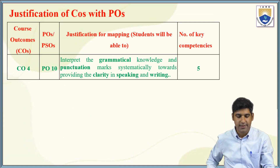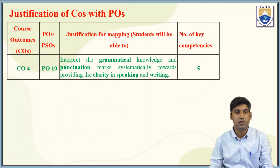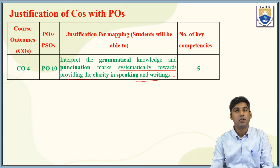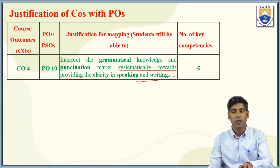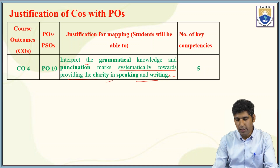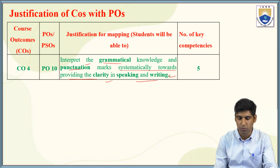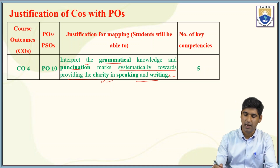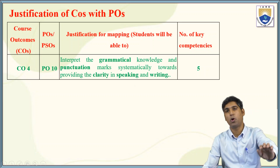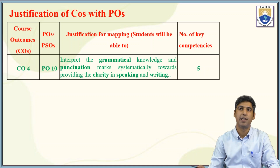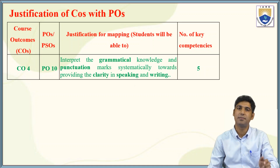After the program outcomes, there is the justification of mapping — justification of COs with POs. A student will be able to interpret grammatical knowledge and punctuation marks systematically towards providing clarity in speaking and writing. Your program outcomes want you to be a person who can speak with fluency and confidence, write more clearly — and this can be attained through your course outcomes, which provide you these things.